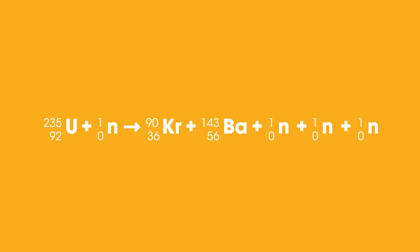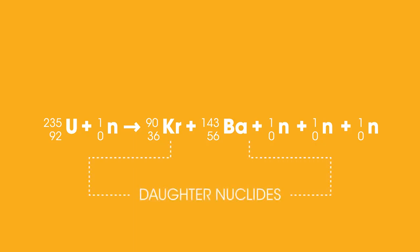Upon fission of a single nucleus of uranium, we get both barium and krypton — also called daughter nuclei — along with three neutrons.